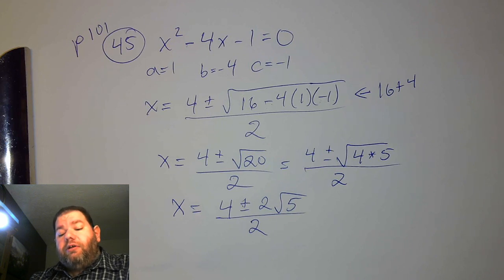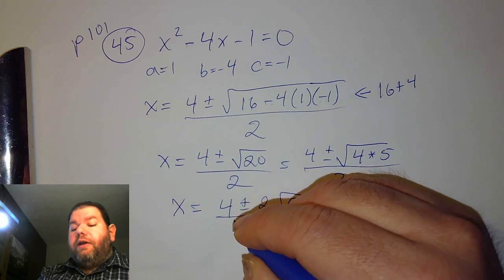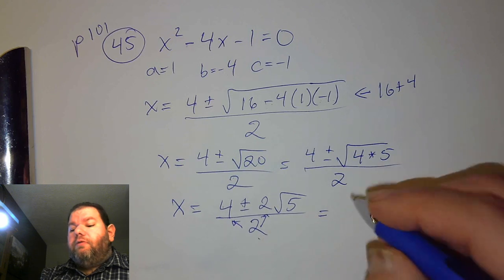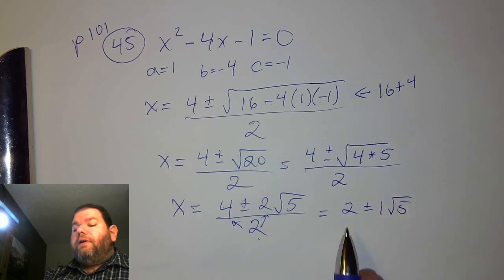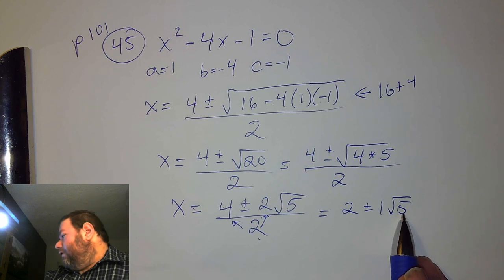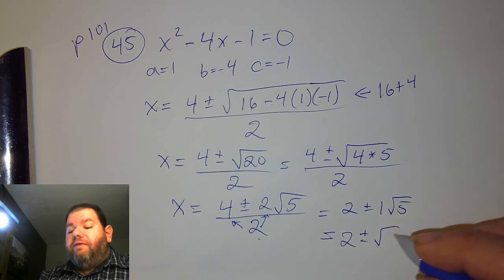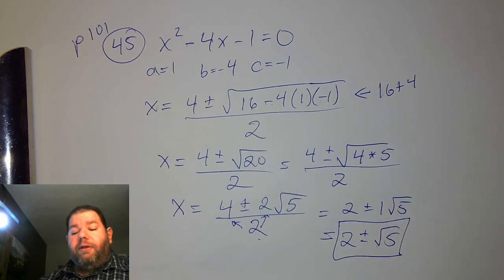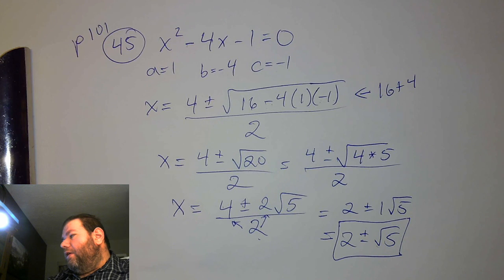At this stage we have 4 plus or minus 2 square root of 5, and then it's all divided by 2. This 2 on the bottom can divide into both terms: 4 divided by 2 is 2, and 2 divided by 2 is 1. So it becomes 2 plus or minus 1 times the square root of 5. We can also call that just 2 plus or minus the square root of 5, since the 1 is implied. I hope that was helpful.